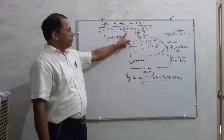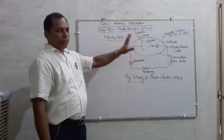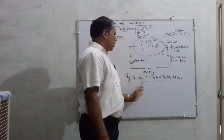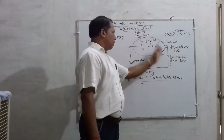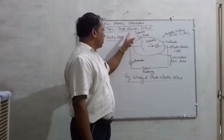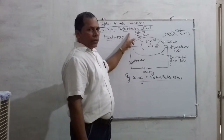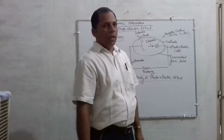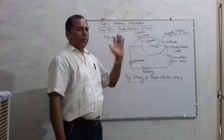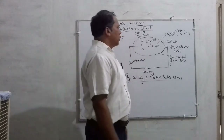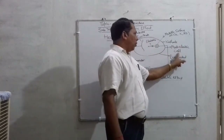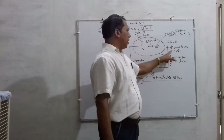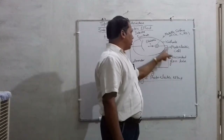In a very simple way you can explain it. The figure concerned with photoelectric effect is depicted here. This photoelectric effect was given by Hertz in 1887. In his experiments, he constructed a cell known as a photoelectric cell, which consists of an evacuated glass tube.